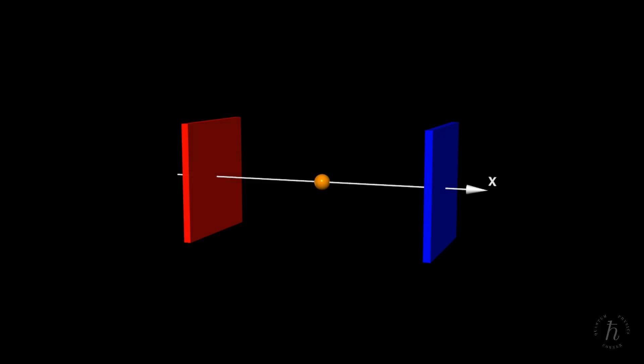Let's start by defining our system. Imagine a particle that can move only along a line, we'll take that line to be the x-axis. Now let the particle's motion be confined between two solid, impenetrable walls. The color of the walls has no physical meaning, it's purely for visual appeal.